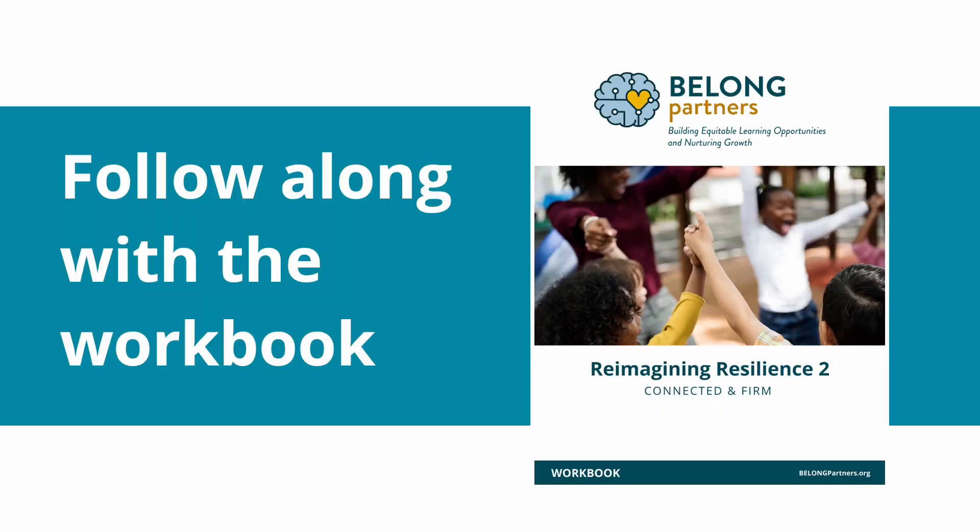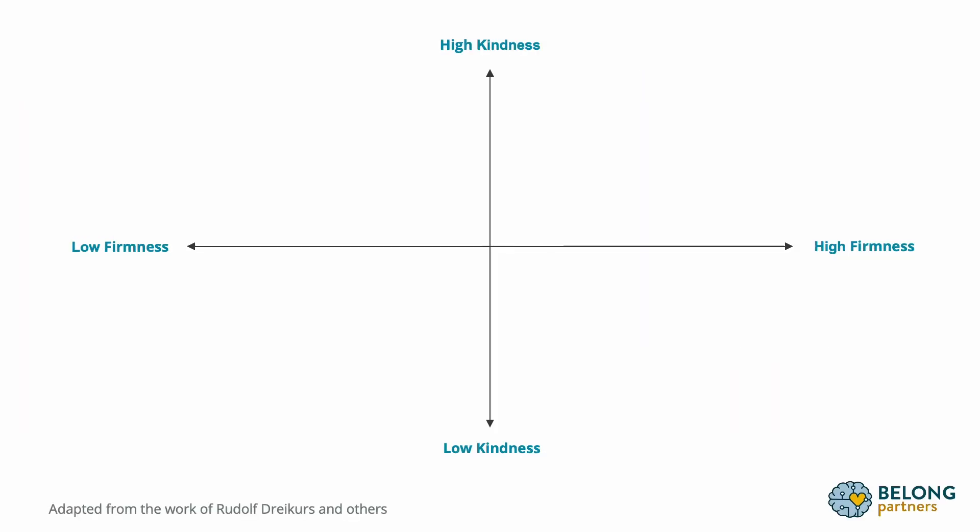One way to think about teaching or parenting styles is in terms of kindness and firmness. If you take a look at the graph, we've got high kindness at the top, low kindness at the bottom, high firmness on the right, and low firmness on the left. When we're talking about firmness here, we really mean being connected to our own values and our respect for ourselves in a situation.